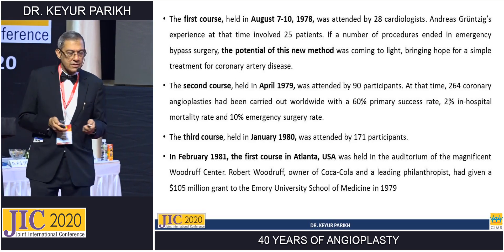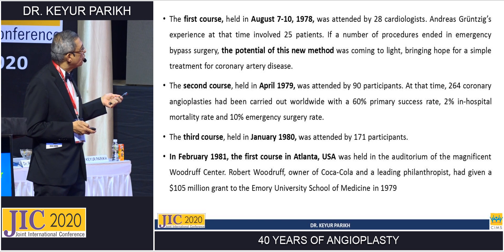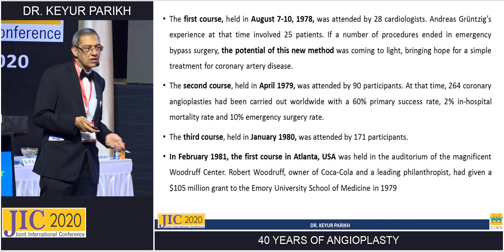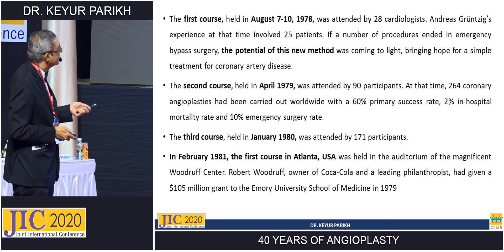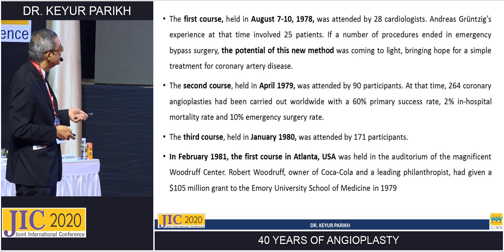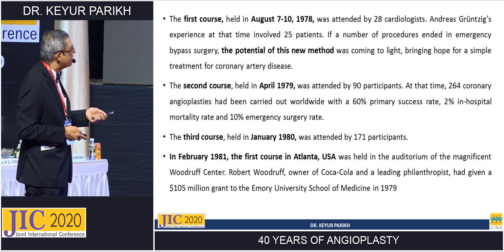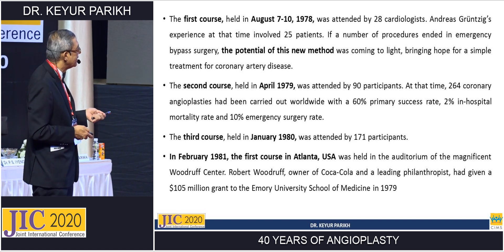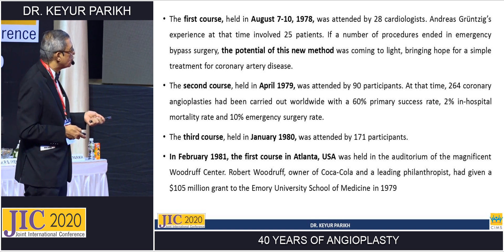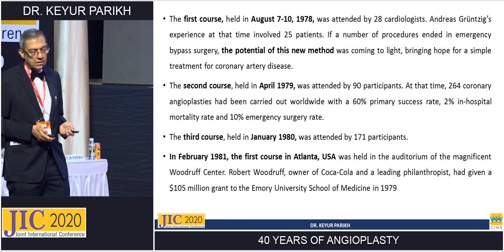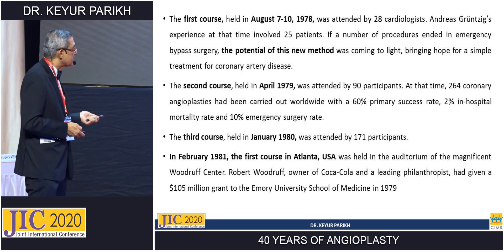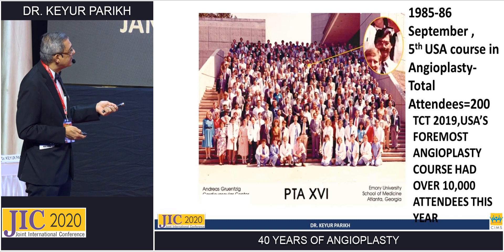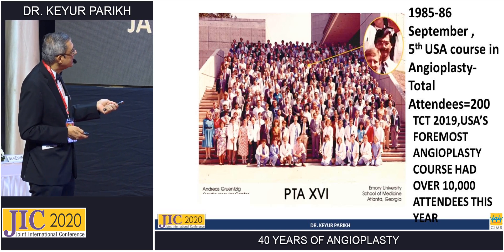Gruentzig, who was in Switzerland, started doing his first course in August 1978. Only 28 cardiologists attended — about one-third of the people in this room right now — and most of them were just laughing. The second course in 1979 was attended by 90 participants, the third course in 1980 by 170. In 1981, he was brought to Emory University in Atlanta. By his fifth course in 1985-86, I attended — you can see me there with a mustache — and total attendees were about 200.